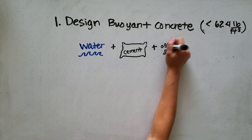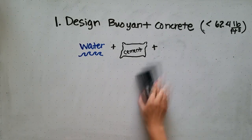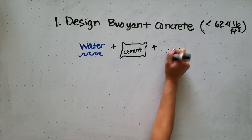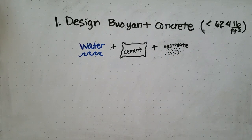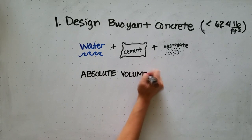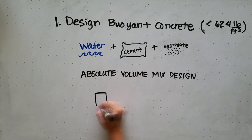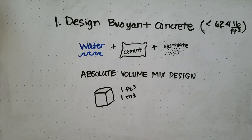Generally the aggregates are sand or gravel that are pretty heavy, so we take those out and we add small lightweight glass spheres. For your concrete mix design, you'll want to use the absolute volume mix design method, which means we're going to design a specific volume of concrete based on the density of the material.